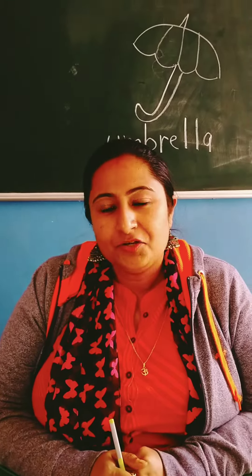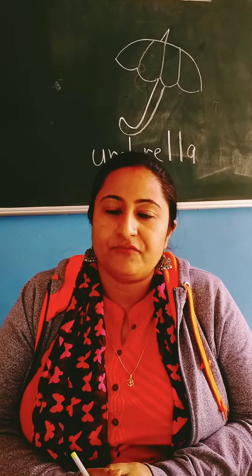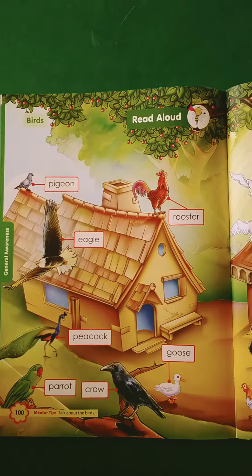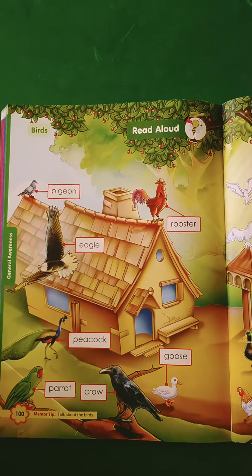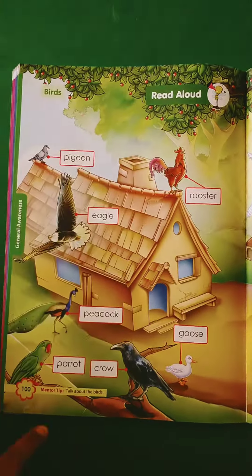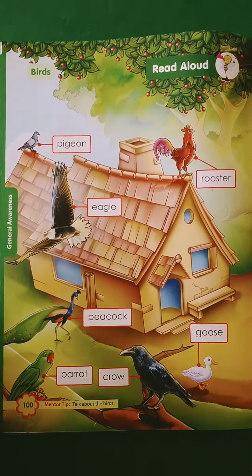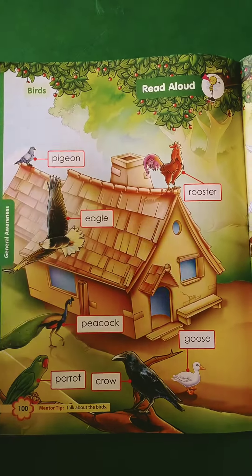Good morning children, today we are going to do the revision of names of birds, insects and homes of animals. Take your book number 5 and open the page number 100, and this is birds.